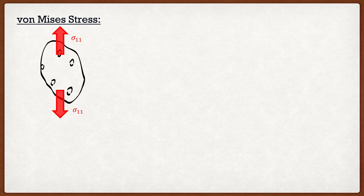The next stress measure we're going to look at is the von Mises stress, which is perhaps one of the most important stress measures you can take away from this lesson. To understand what it is, let's use an example. We're going to take a potato into the structural lab and subject it to some uniaxial tension.